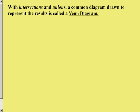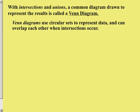Okay so let's take a look. Now as we talked about yesterday we have things called intersections and unions. When you have intersections and unions there is a common diagram drawn to show those results. And the type of diagram is called a Venn diagram after the mathematician that conceived the original structure.